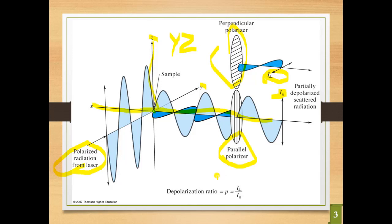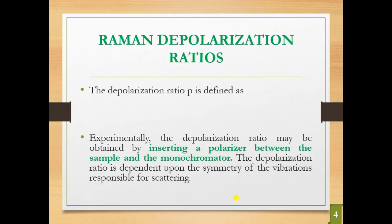The depolarization ratio is defined as I perpendicular divided by I parallel. Experimentally, the depolarization ratio may be obtained by inserting a polarizer between the sample and the monochromator.